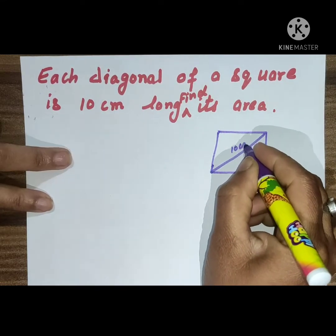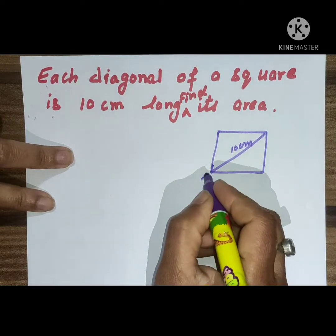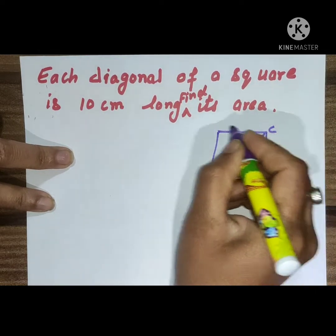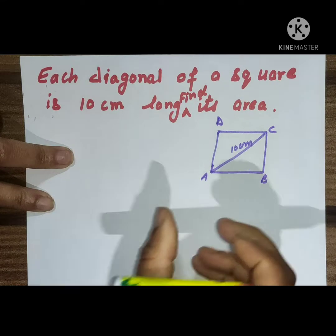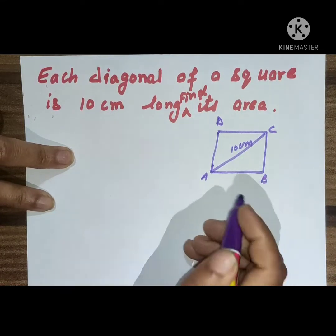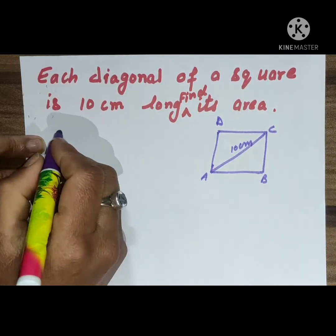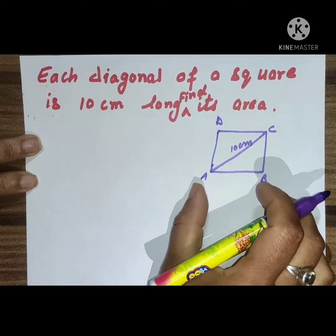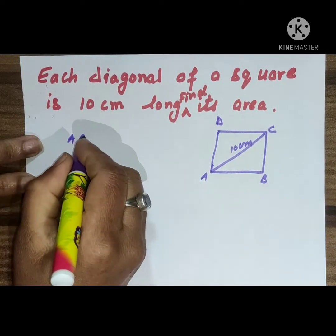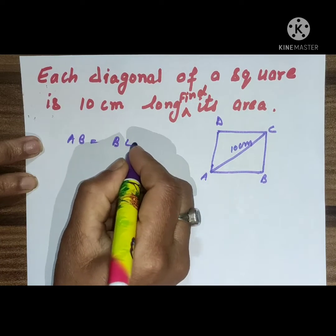I made a square. Its diagonal is 10 centimeters. This is the square ABCD. So all the sides of the square are equal, so we will consider that AB is equal to BC, is equal to x centimeters.